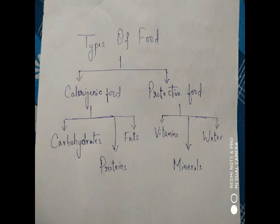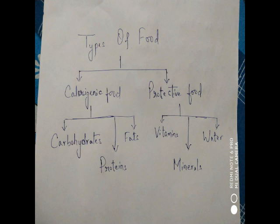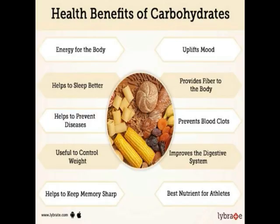Since nutrition is directly related to food, we need to know what types of food there are. Food is categorized into two types: calorigenic food and protective food. Calorigenic food provides calories and energy to our body, while protective food protects our body from diseases. Calorigenic food is further divided into three types: carbohydrates, proteins, and fats.